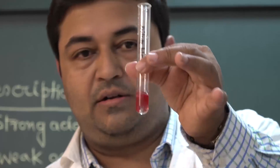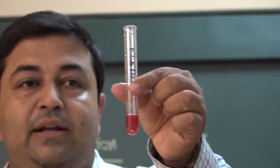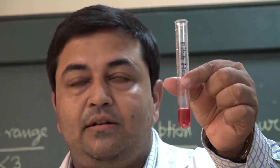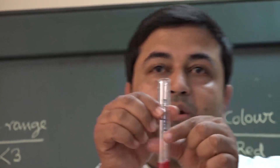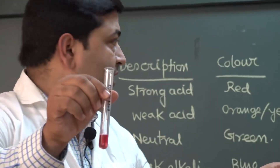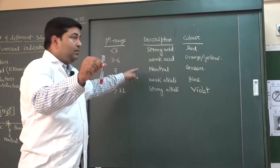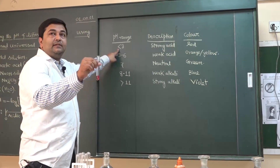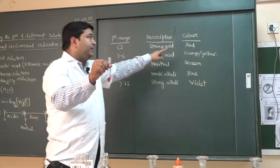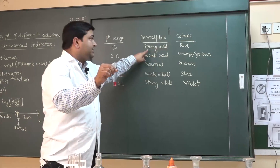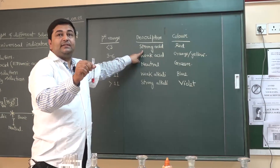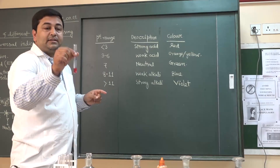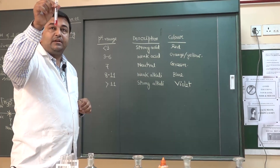The color for HCl is red. According to the table, when the pH is less than 3 the color will be red, meaning it is a strong acid. You know hydrochloric acid is a strong acid, that is why the color is coming red.